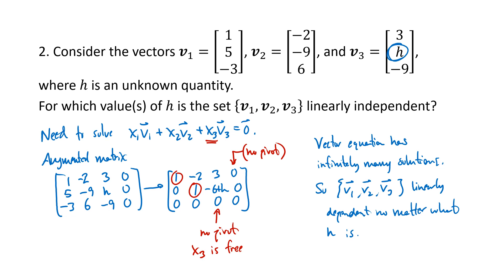I want to emphasize both the setup before row reduction and the conclusion after. Don't just slap the vectors in a matrix and row reduce without understanding why. We set up the matrix because we needed to solve that vector equation. Then after row reducing, we were looking for whether there were any nontrivial solutions — and because we found infinitely many solutions due to the free variable, that gave us our conclusion. Set the stage for what you're doing and why before launching into row reduction.